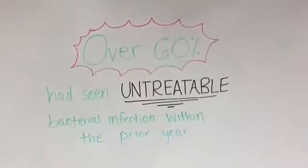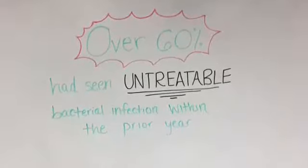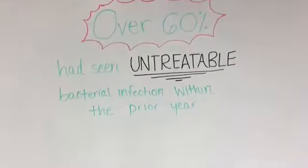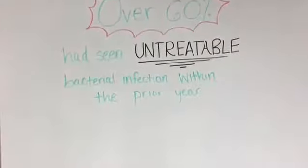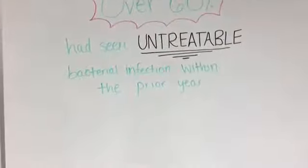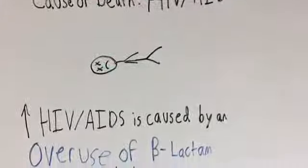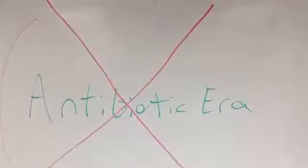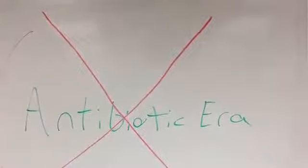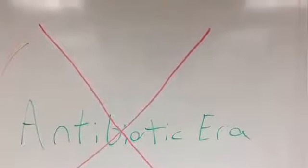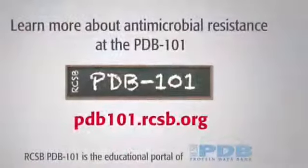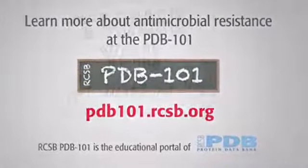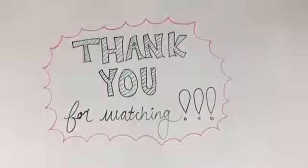According to the 2011 survey conducted by the IDSA, over 60% of participants had seen an untreatable bacterial infection within the prior year. This can be related to the overuse of gram-positive beta-lactam, which has caused an increase in gram-negative bacterial resistance, leading to an upswing in deaths caused by HIV and AIDS and other diseases influenced by gram-negative MRSA. In addition, the World Health Organization deems this as the end of the antibiotic era, as antibiotic resistance is causing much harm. This is all attributed to the overuse of antibiotics, which will further drastically decrease the effects of antibiotics and increase the harms of gram-negative bacteria.